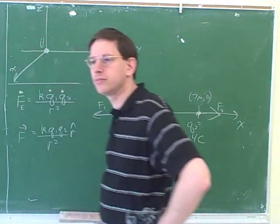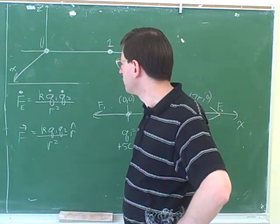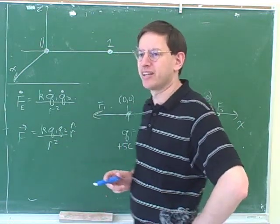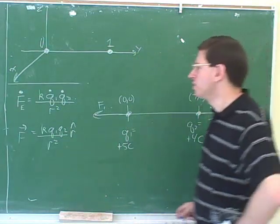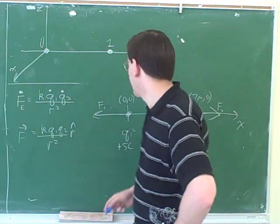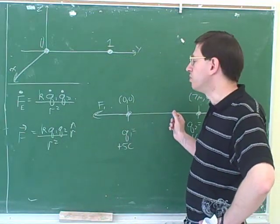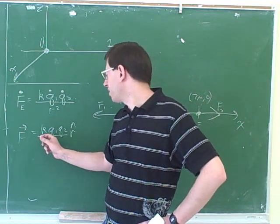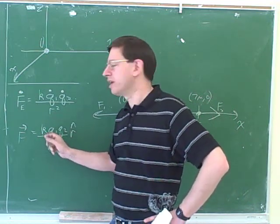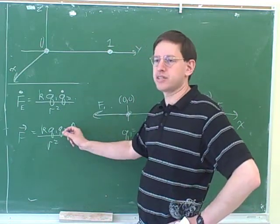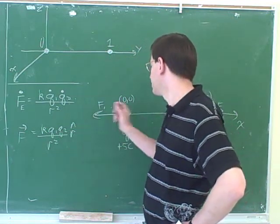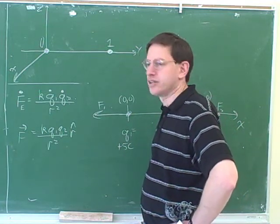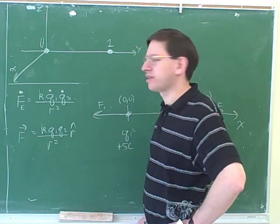We need to know both the magnitudes and the directions — but we'll know the directions from common sense. Getting the magnitude from this equation and the direction from common sense is enough to solve the problems, because that's all the information we'd get out of the vector equation anyway. The easier way is just to use our knowledge that like charges repel and opposite charges attract.